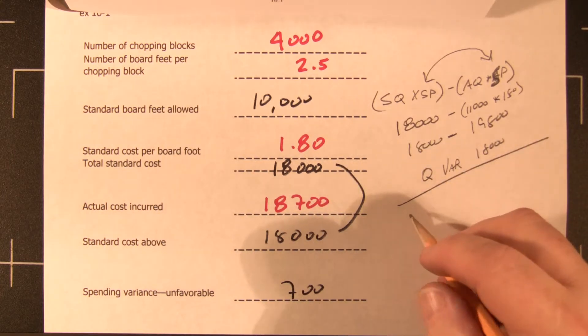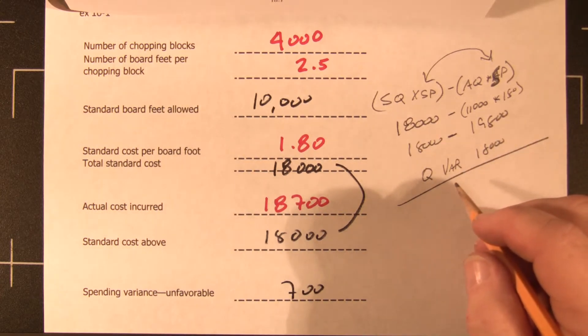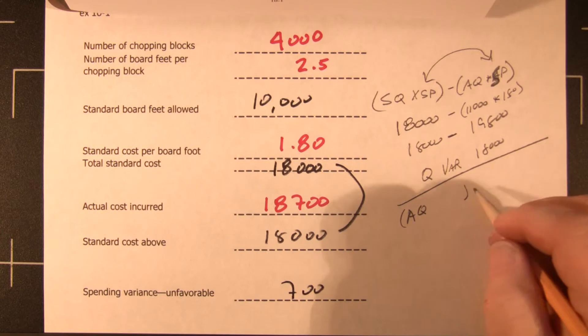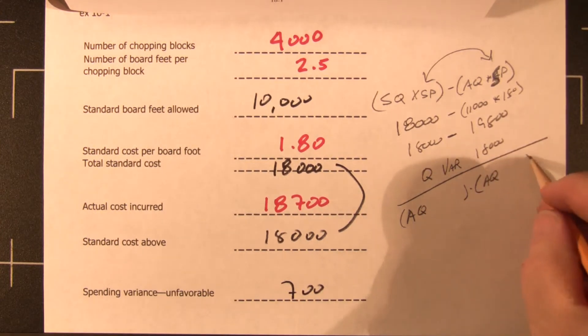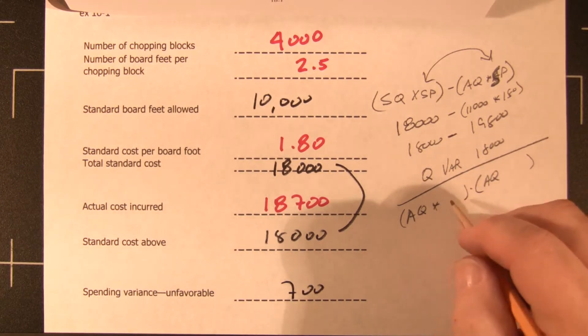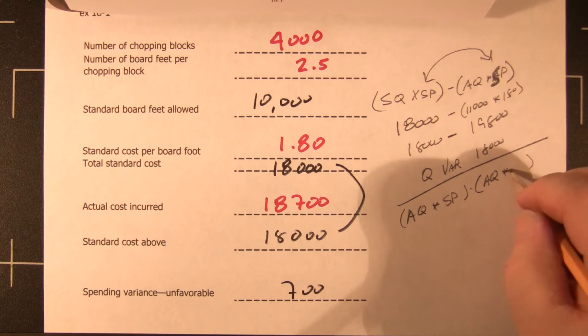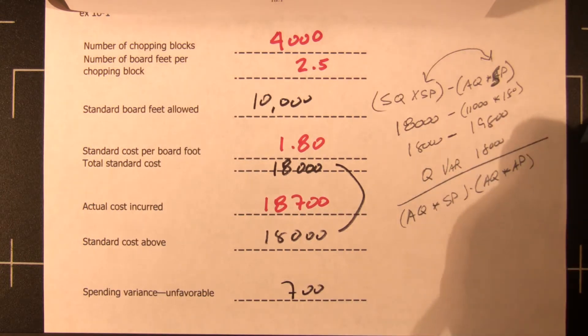And the price variance, we keep the actual quantity constant, because that's what we're looking at, that's what we're holding constant, and we're going to compare the standard price and the actual price. So it's the actual quantity times the standard price times the actual quantity times the actual price.